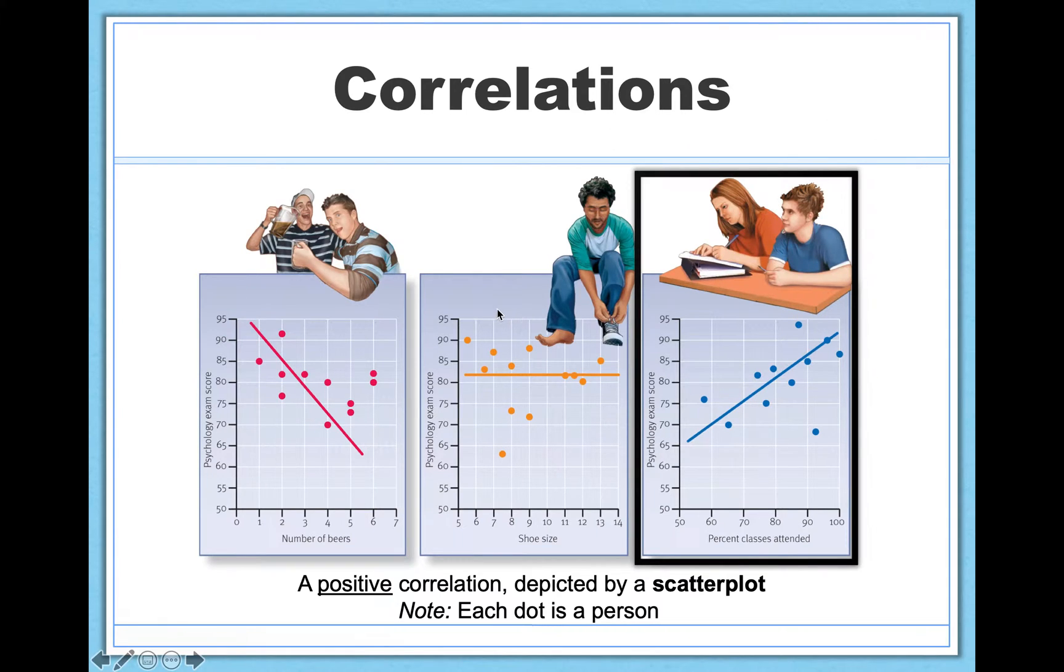So if we're trying to look at correlations graphically, we're going to use a scatter plot, this dot graph that we saw before in our last video. So this is what a positive correlation looks like on the very right here. This is the relationship between the percentage of class attended and your grade on an exam. So this is positive because as the x variable increases, the y variable also tends to increase.